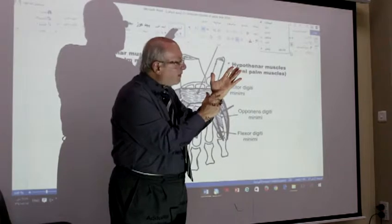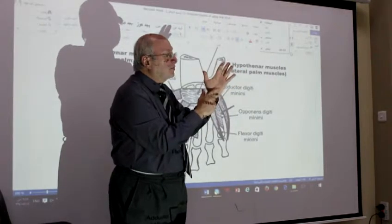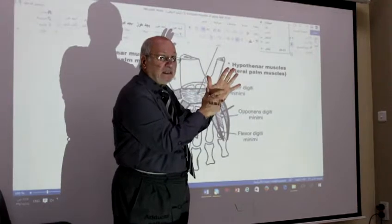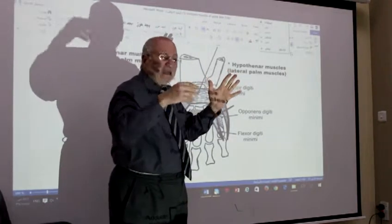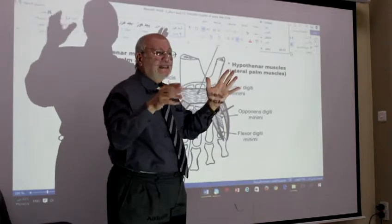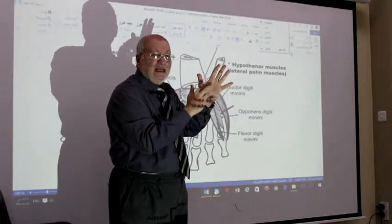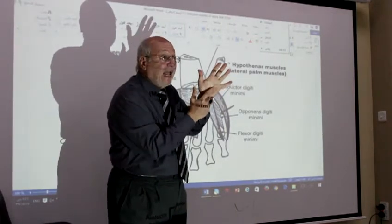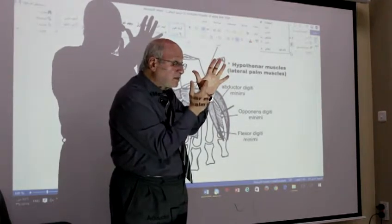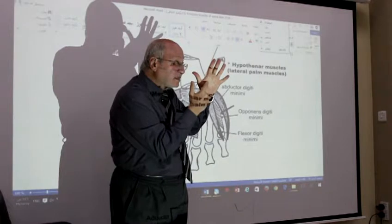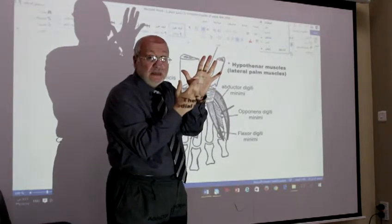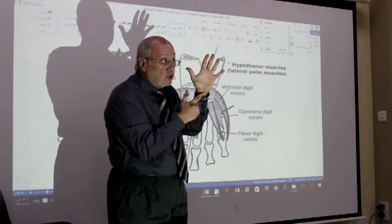Sublime — high. Then enter in the middle compartment of the above in the hand. Sublime. And sublime — finally, the most medial muscle in the center of the hand, which is adductor pollicis. Draw the course on your hand.